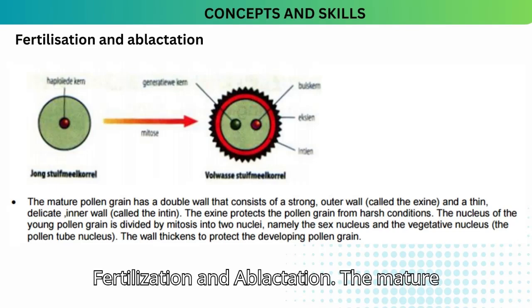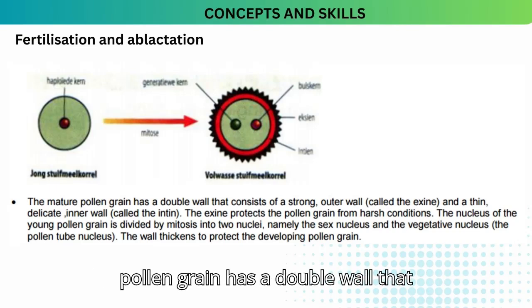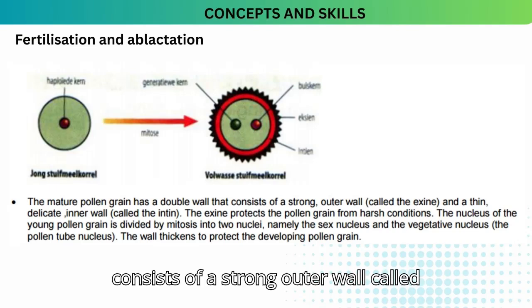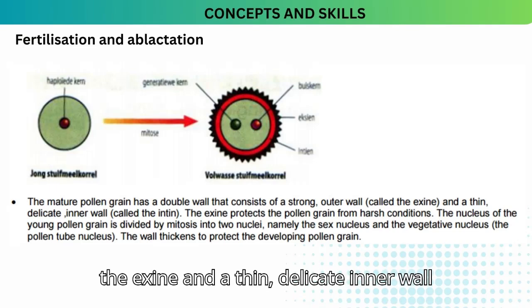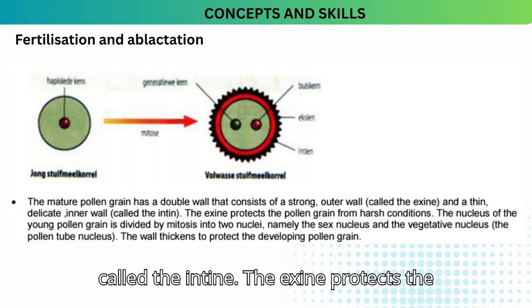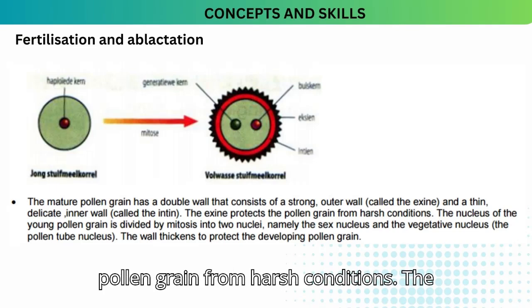Fertilization and ablactation. The mature pollen grain has a double wall that consists of a strong outer wall called the exine, and a thin, delicate inner wall called the intine. The exine protects the pollen grain from harsh conditions.